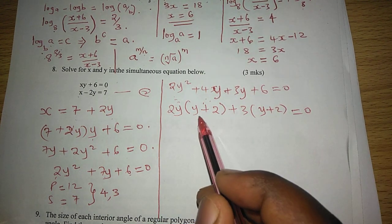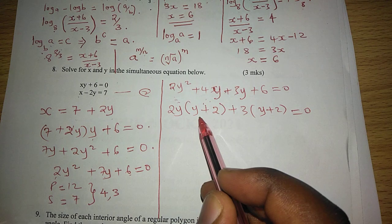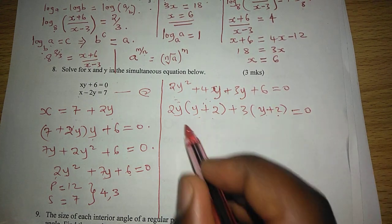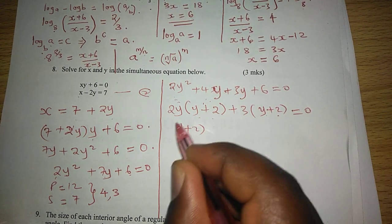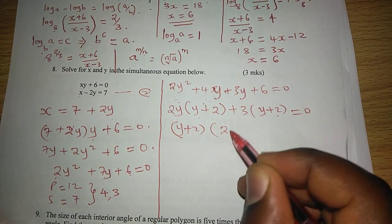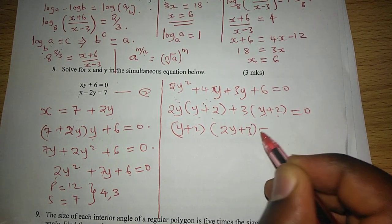Now we can lift y plus 2 because it is common. So y plus 2 times 2y plus 3 equals to 0.